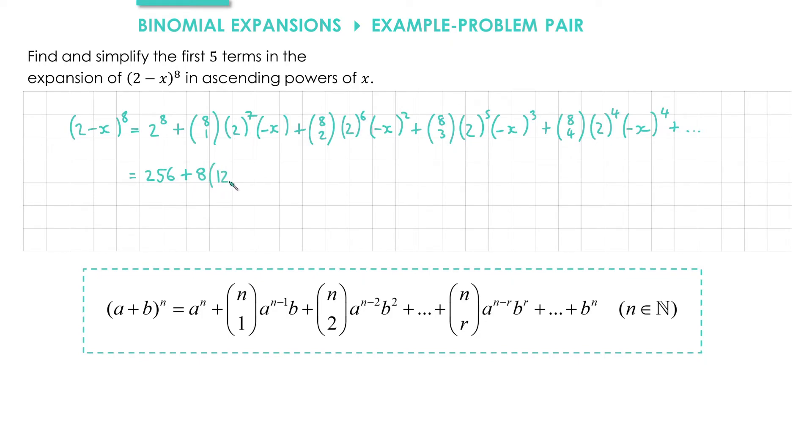2 to the power of 7 is 128, and we've got minus x, which we'll just leave as it is for now.